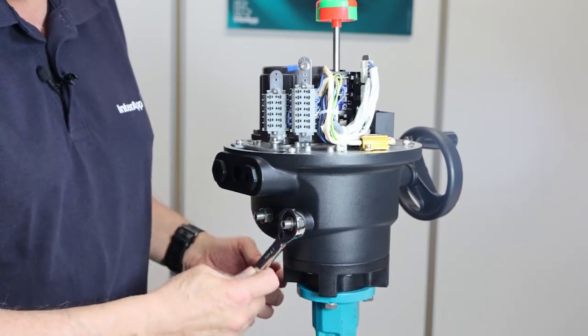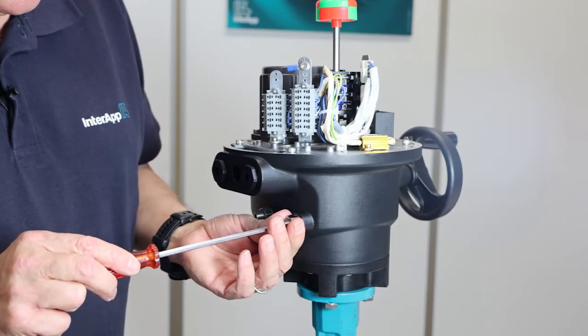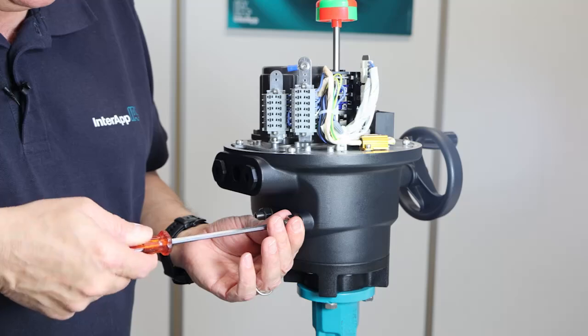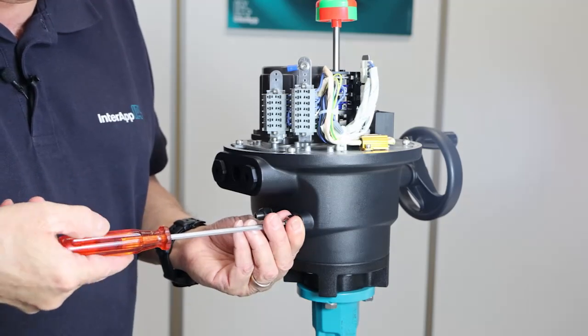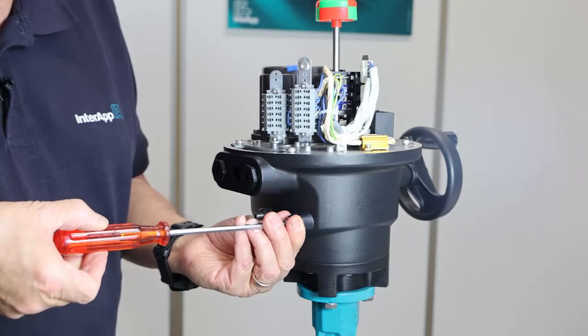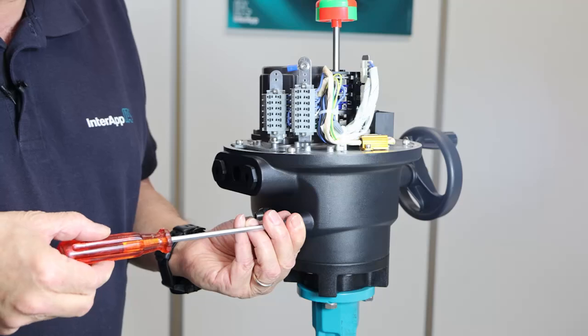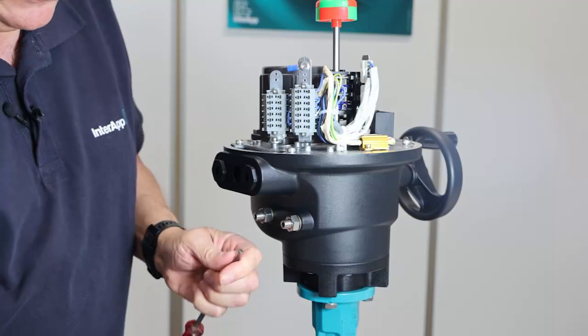After loosening the nut, turn the mechanical screw until it reaches the actuator stroke. Then turn the screw one and a half turns back, and fixate the nut with the counter screw.